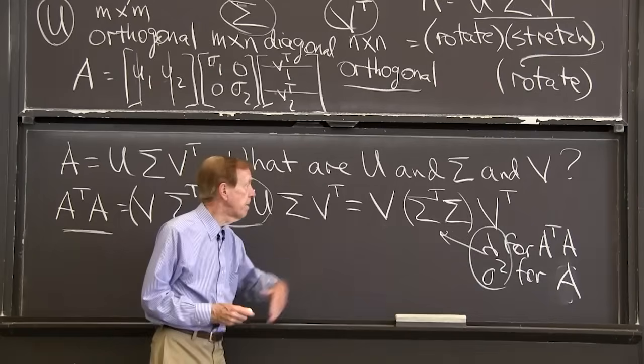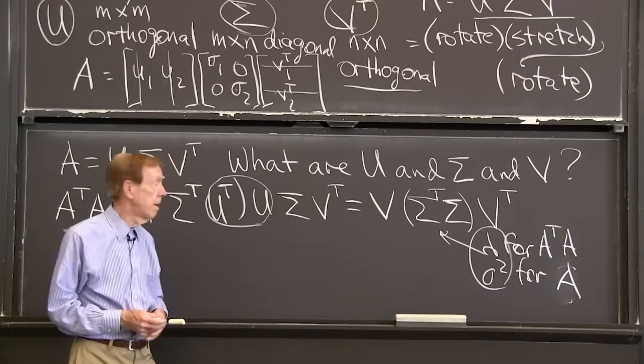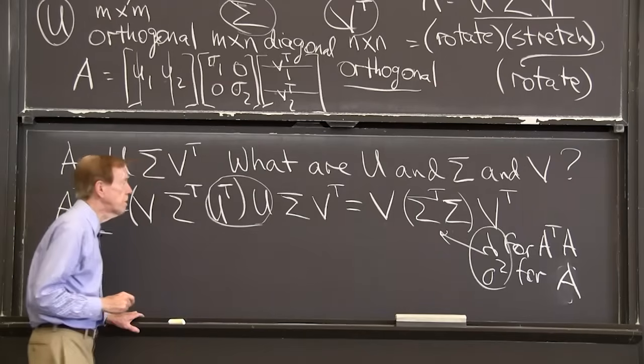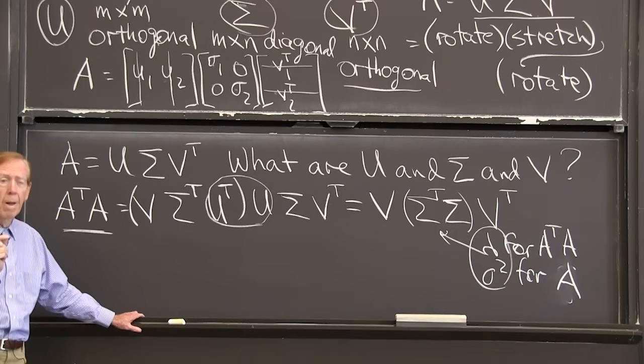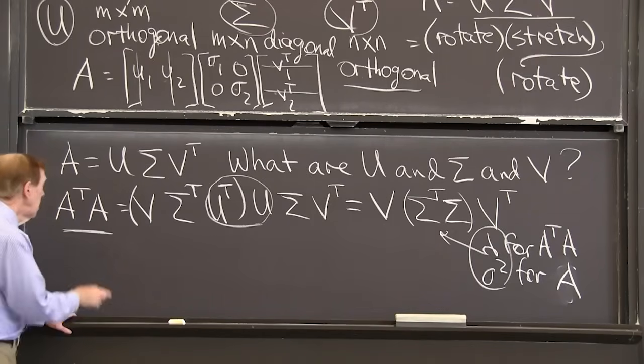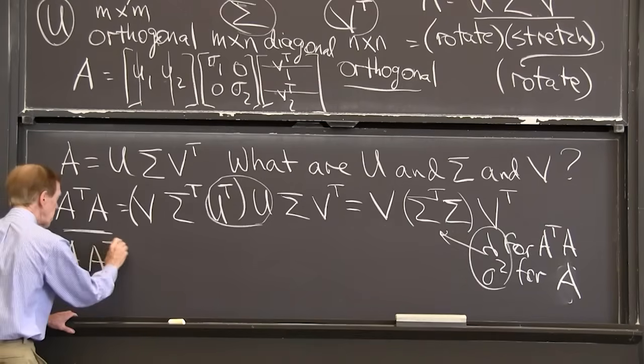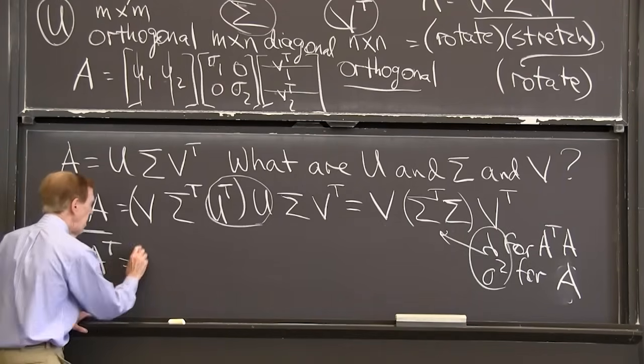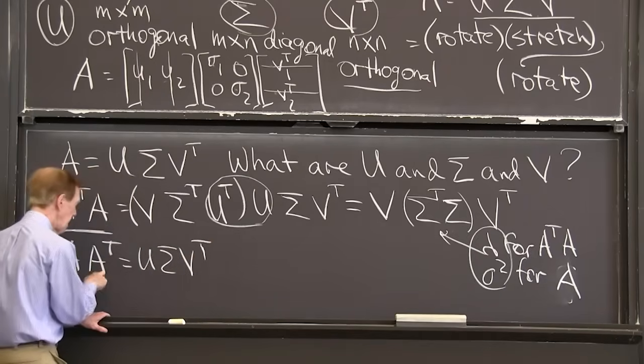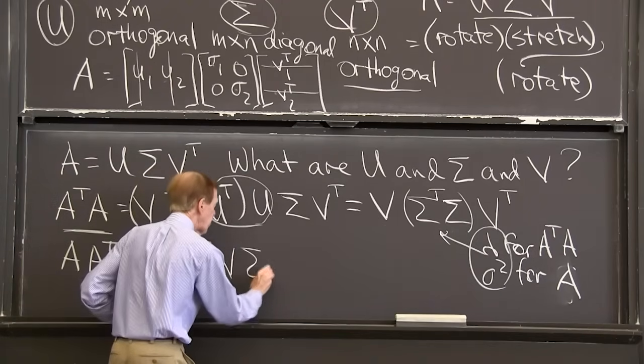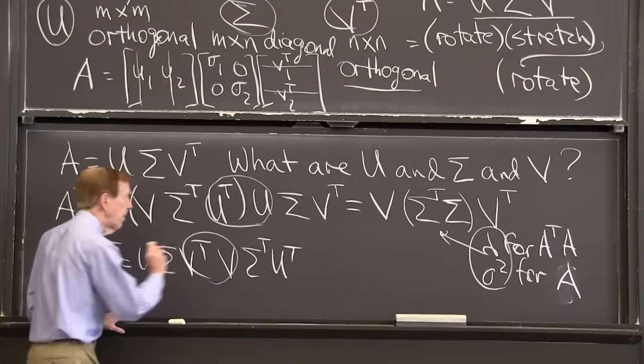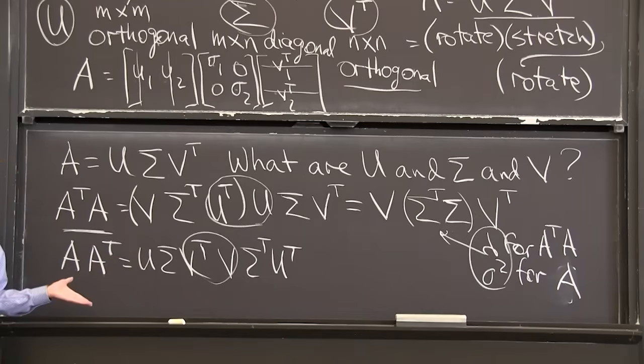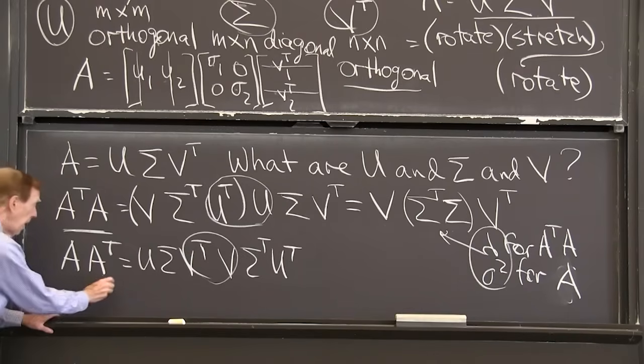That tells me V, that tells me sigma. U disappeared here because U transpose U was the identity. It just went away. How would I get hold of U? Here's one way to see it. I multiply A times A transpose in that order. So now I have U sigma V transpose times the transpose, which is the V sigma transpose U transpose. V transpose V is now the identity in the middle. I learned that U is the eigenvector matrix for AA transpose.